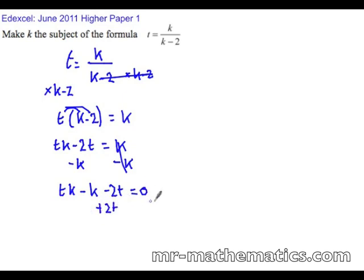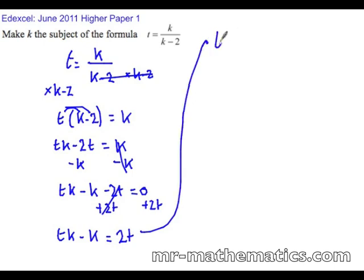And now we're going to get the 2t onto the right hand side by adding it to both. So tk minus k equals 2t. Just write that out again: tk minus k equals 2t.